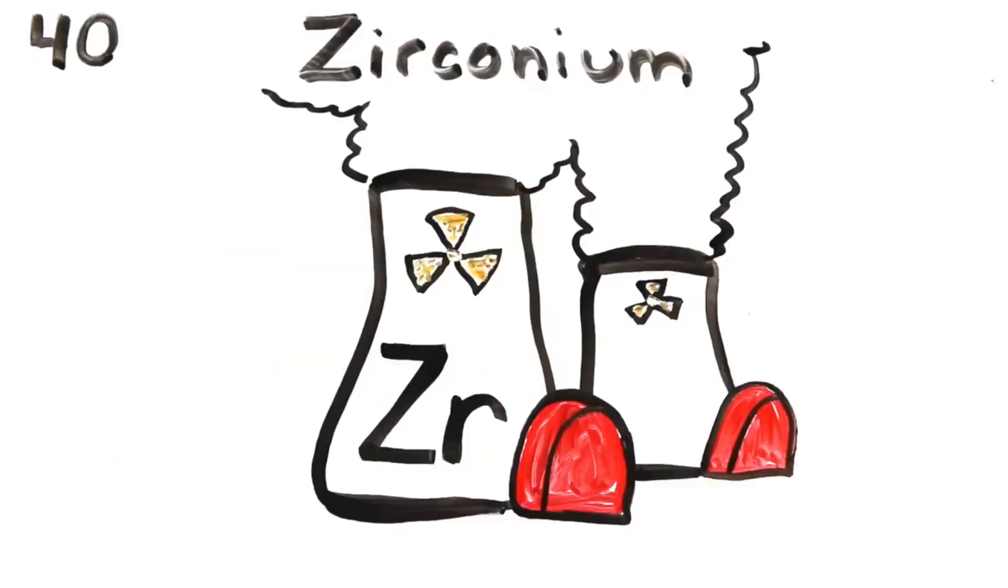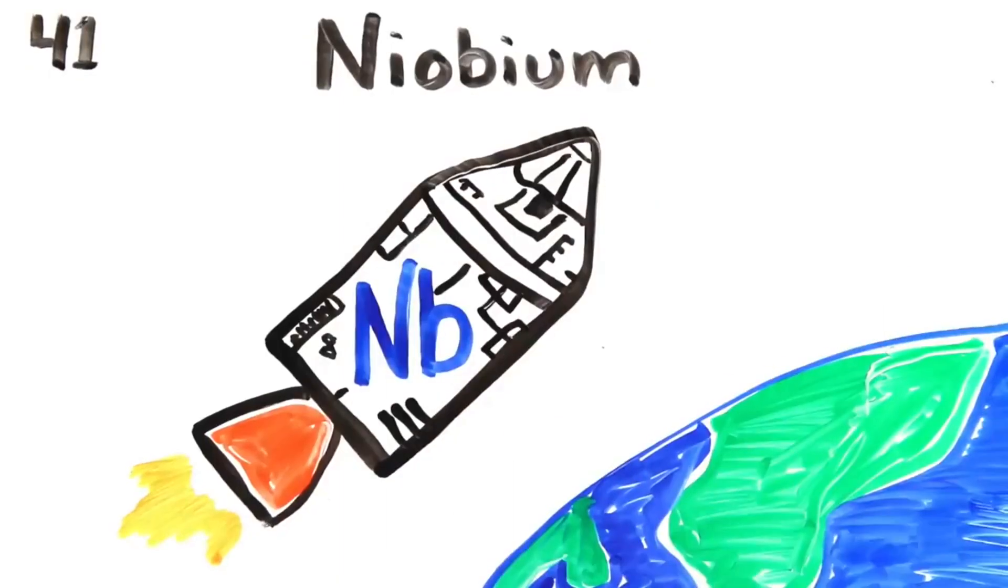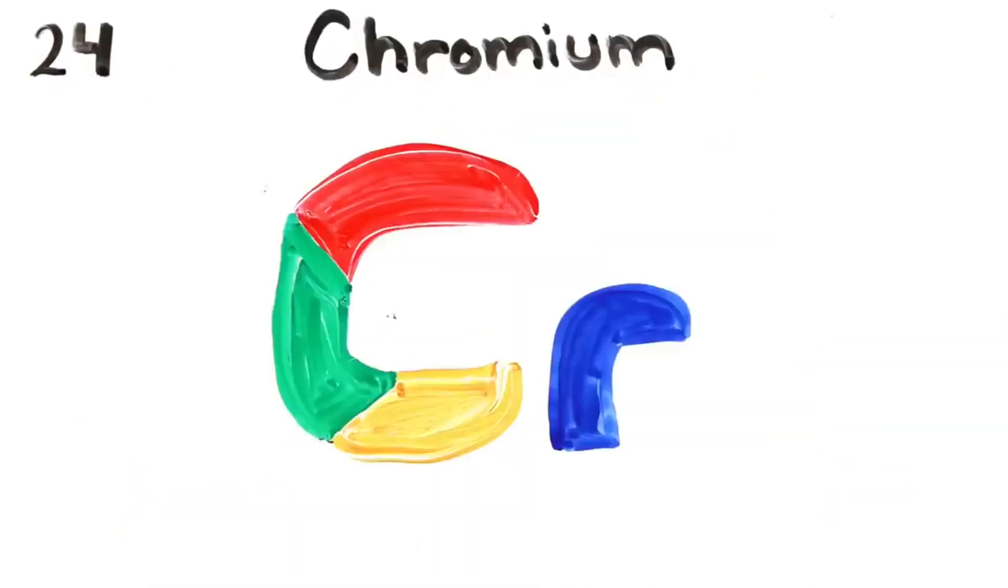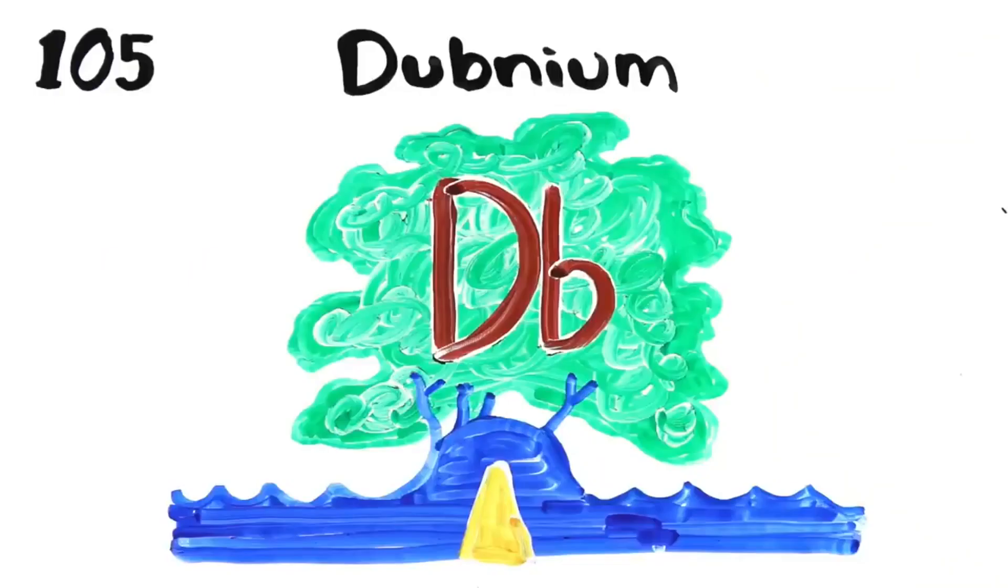Rutherfordium, Dubnium, Seaborgium, Bohrium, Hassium, Meitnerium, Darmstadtium, Roentgenium, Copernicium, and then we're onto Nihonium,